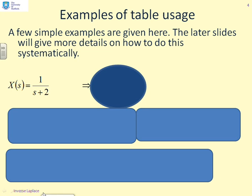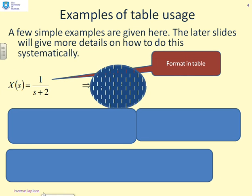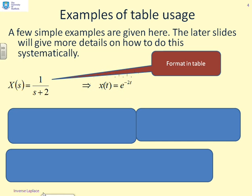Here's an example to get you started on how you might use the lookup table. Let's assume you have a transform X(s) equals 1 over s plus 2. Now you want to match this to a form in the table. To be honest, this example is almost too simple because it's already done. The format in the table is 1 over s plus a, and 1 over s plus a was equivalent to e to the minus at. So here, 1 over s plus 2, you can see that 2 is equivalent to a, and therefore you get x(t) equals e to the minus 2t.